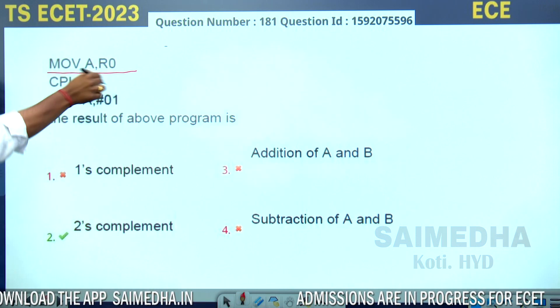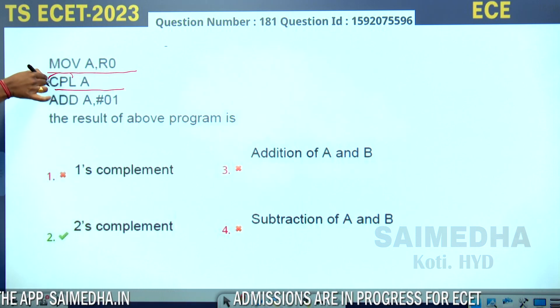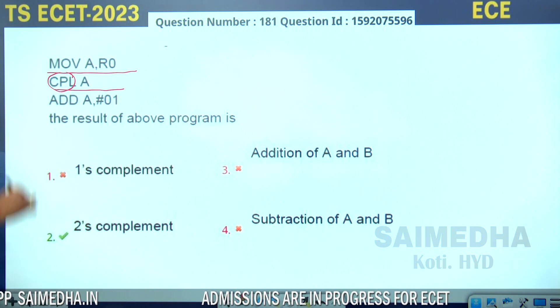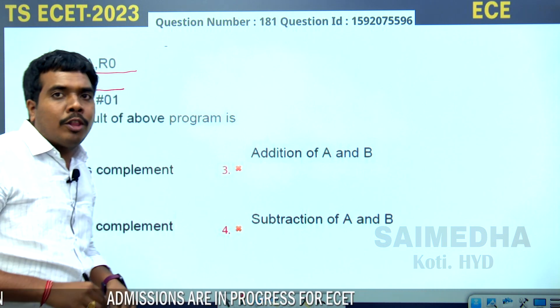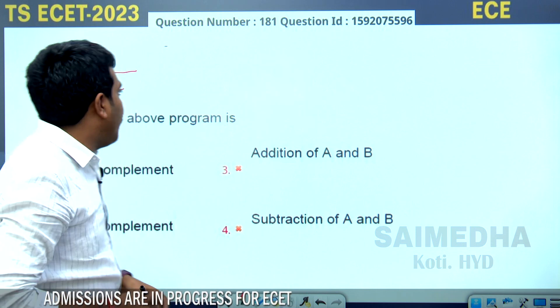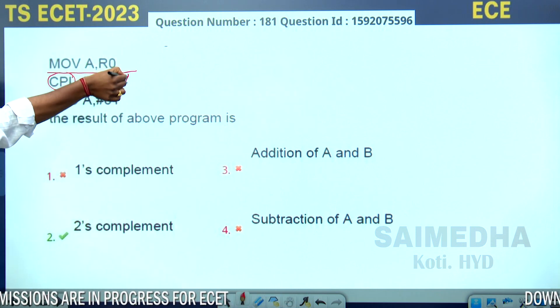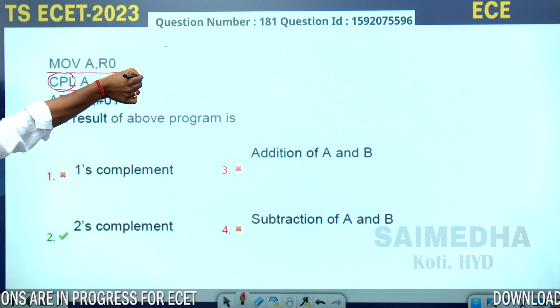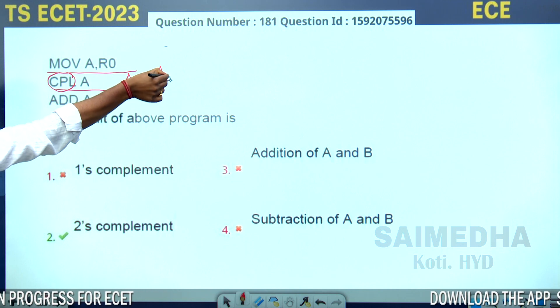The next instruction is CPL. CPL is the mnemonic for complement operation. The accumulator content becomes the 1's complement, so A is equal to 1's complement.